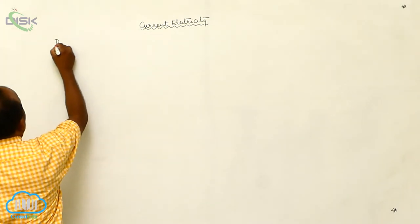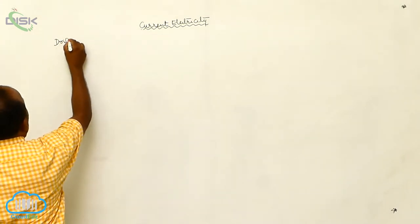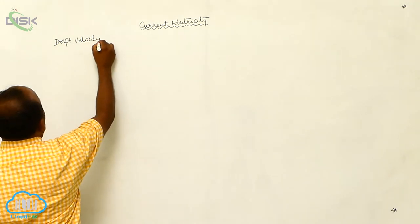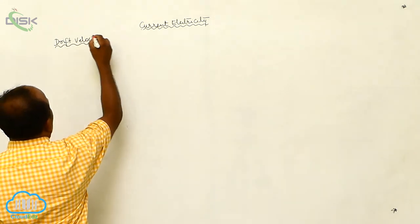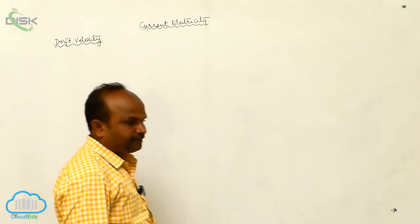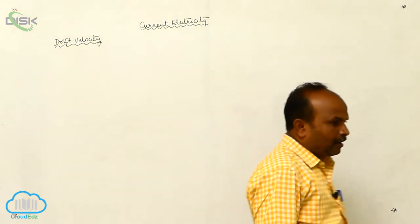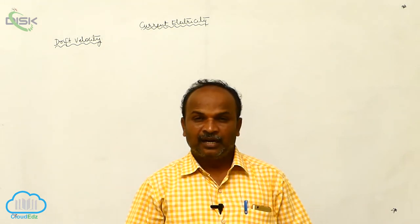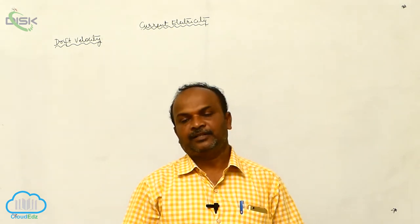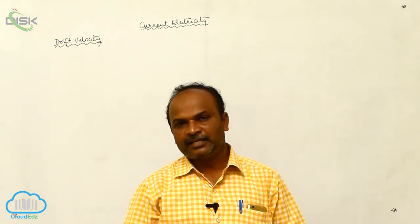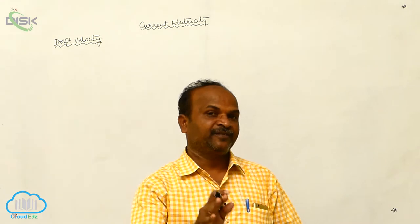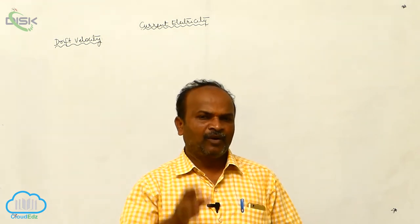What is drift velocity? Current in conductors is due to the drift of electrons, while current in semiconductors is due to the diffusion of electrons. So, what is drift velocity?